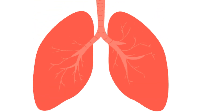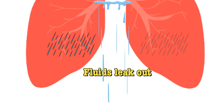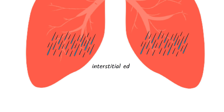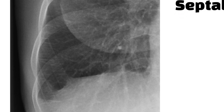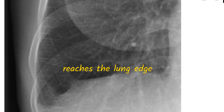When there's increased pressure in the lung vessels, fluids will leak out and cause pulmonary edema. This pulmonary edema can manifest in two forms: interstitial edema and alveolar edema. Interstitial edema is what we see as septal lines, also known as curly B lines. They are horizontal lines that reach the lung edge, caused by thickening of the interlobular septa which separates the secondary lobules at the periphery of the lungs.